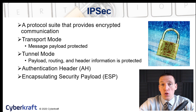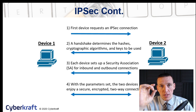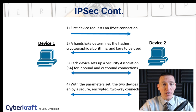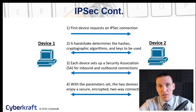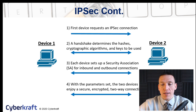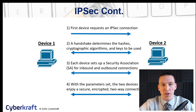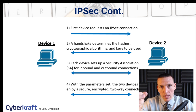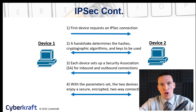IPSec includes an authentication header, usually abbreviated AH, and encapsulating security payload. How IPSec works: first, the user requests an IPSec connection. The second device — the web application — provides information back to determine the handshake process, the hashes, and the encryption algorithms. In step three, each device agrees upon those parameters — the security association — which determines what's used for inbound and outbound connections. With those parameters set, the devices communicate.